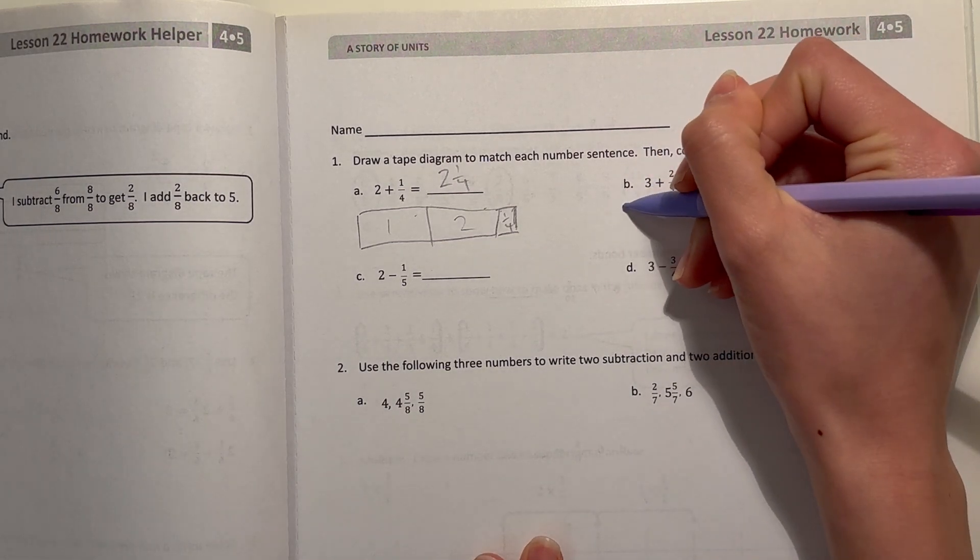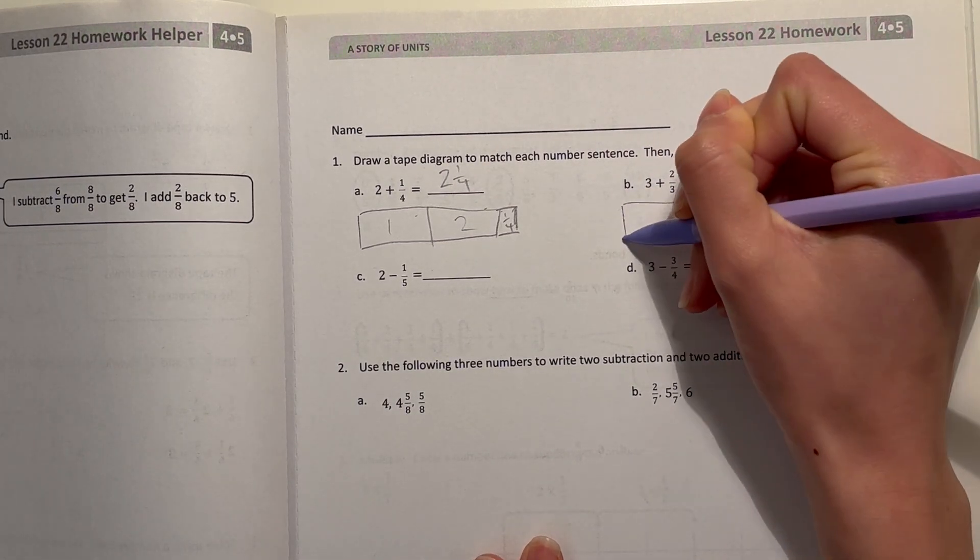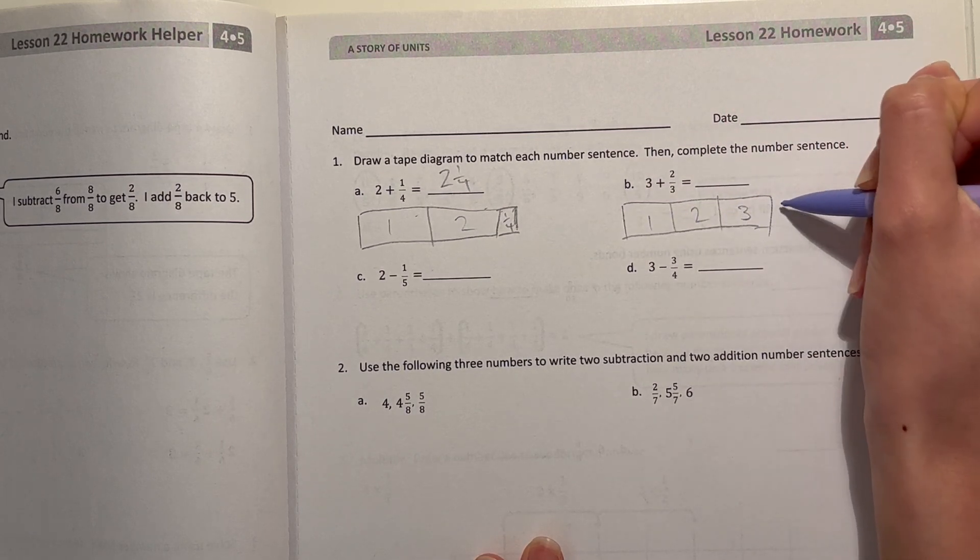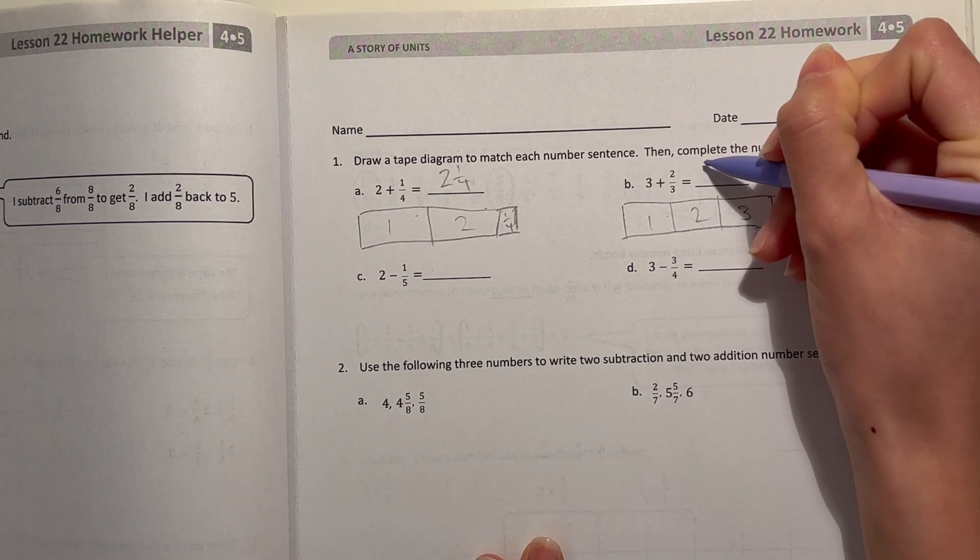Now b, 3 plus 2 thirds. That's 1, 2, 3, plus 2 thirds. So that's 3 and 2 thirds.